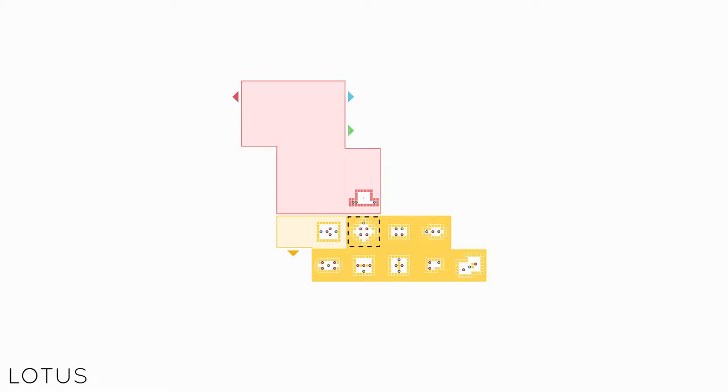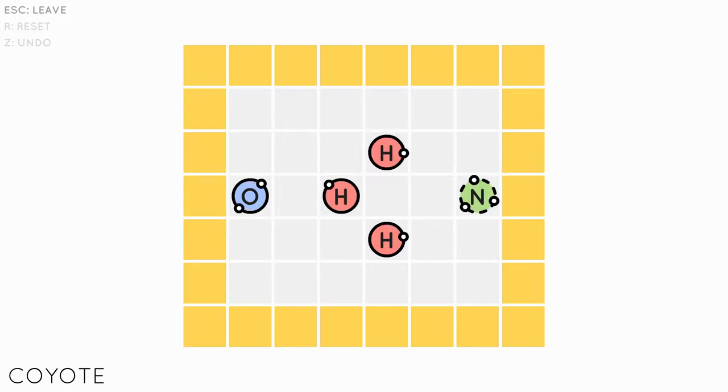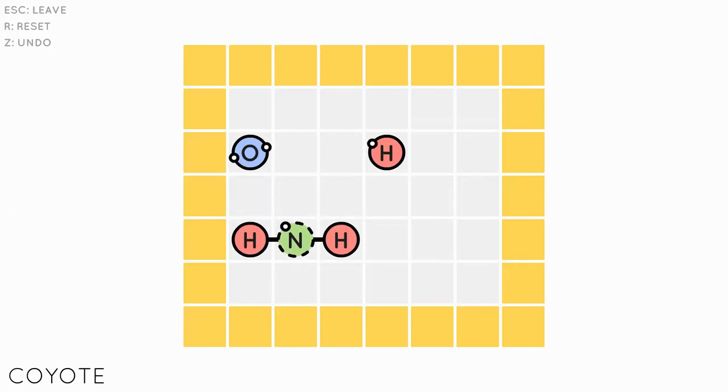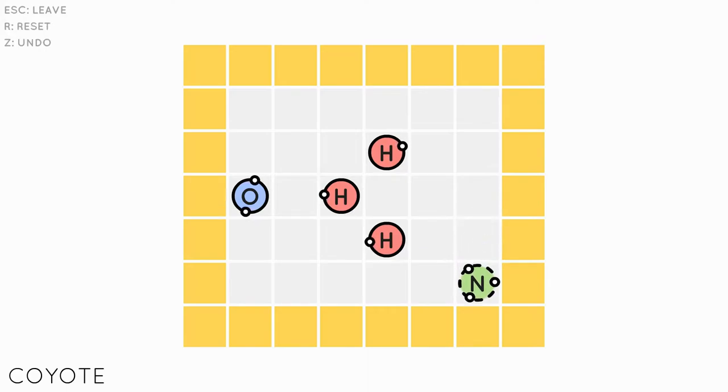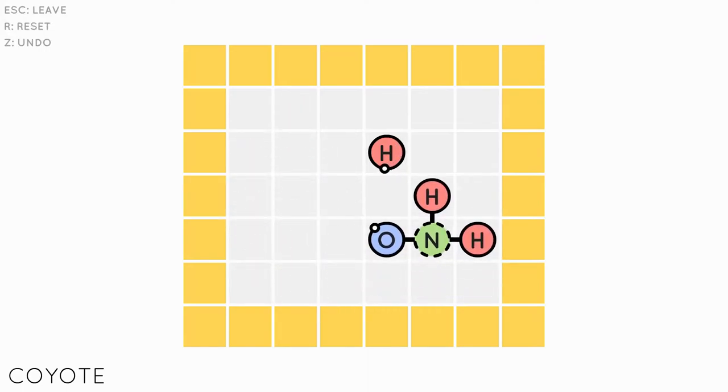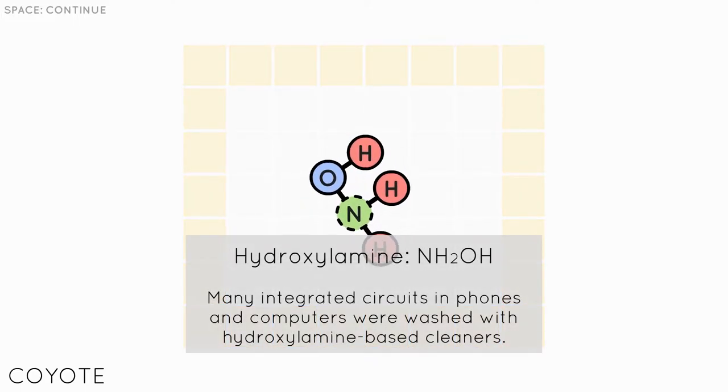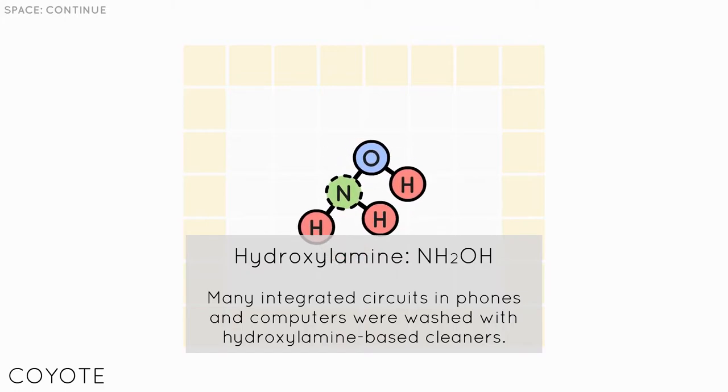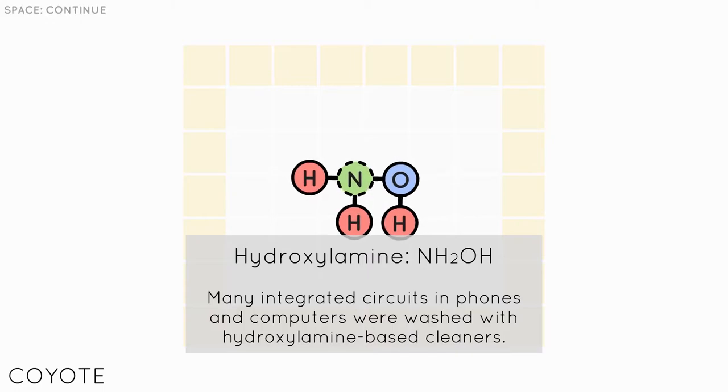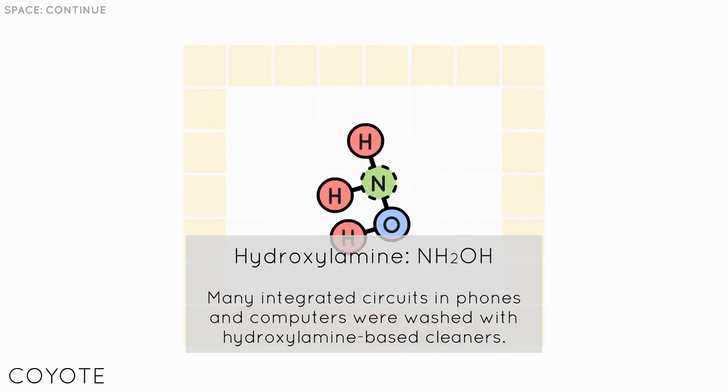There's a lot of levels. It says on the itch.io page and the steam page that there's over a hundred levels. I think I'm just going to do the yellow and maybe touch on the next one. So this is a little more complicated and we're in control of the nitrogen I believe. It doesn't really matter how you structure the bonds as long as they're all bonded together. Hydroxylamine NH2OH. Many integrated circuits in phones and computers were washed with hydroxylamine base cleaners.